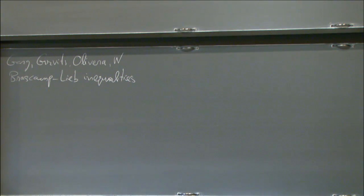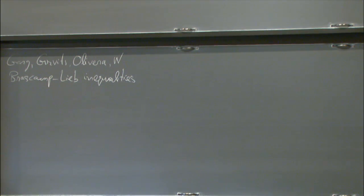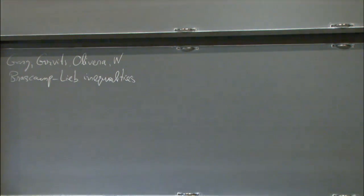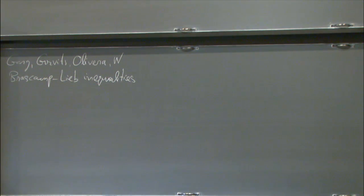This is going to be a gentle introduction to the Brascamp-Lieb inequalities and what they are about. I'll try to give you some intuition about them. The most fascinating thing for me is the connection — this is part of analysis, probability theory, and information theory. But it turns out that the basic questions about inequalities, in particular when do you have them, lead to algorithmic questions and optimization questions. And to answer these, you need highly non-trivial algebra, in particular invariant theory. Next week I'll probably spend mostly with a gentle introduction to the parts of invariant theory used in this work.